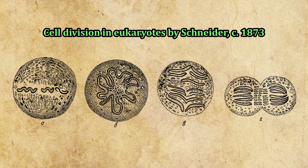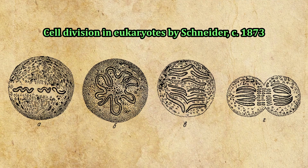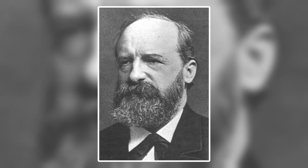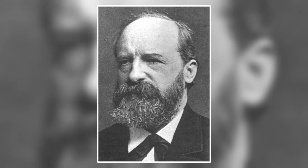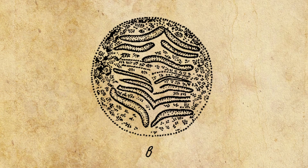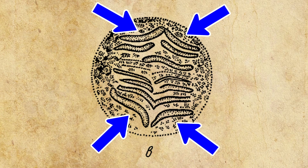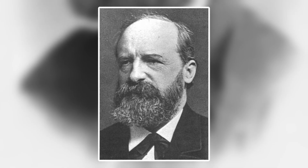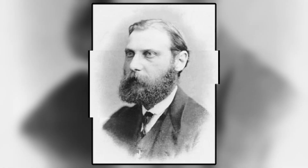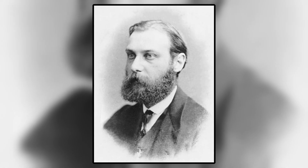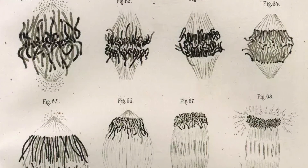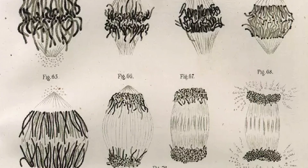By 1873, the first step was taken into understanding cell division in eukaryotes, or cells with nuclei. German zoologist Anton Schneider sketched out some steps of cell division in eukaryotes in his 1873 paper. The big takeaway from his sketches was that he noticed a nucleus transforming into rod-like structures. Schneider interpreted from this that a cell undergoes deformation when it replicates, but another German biologist named Walter Fleming would examine this process in much more detail in the next couple of years and reach a much more detailed conclusion that others before him could not.